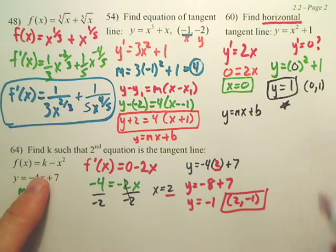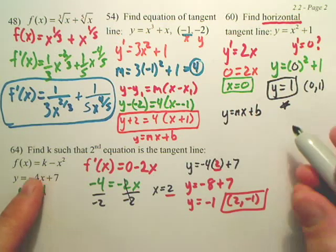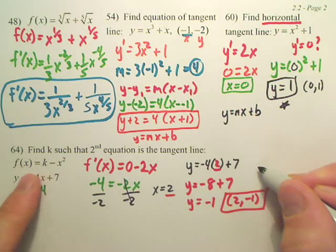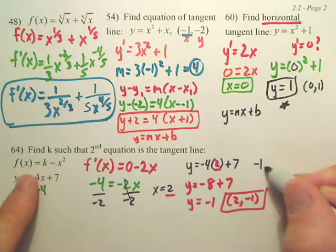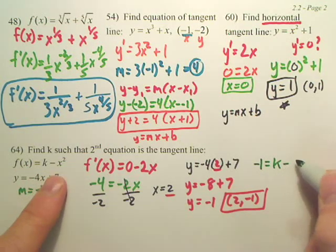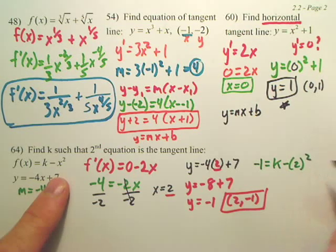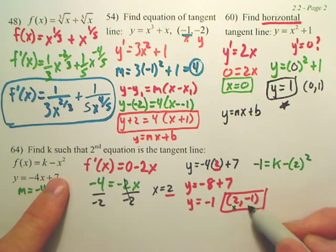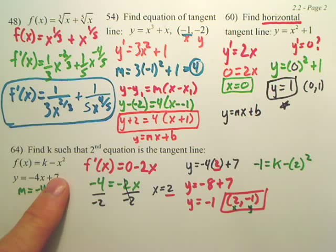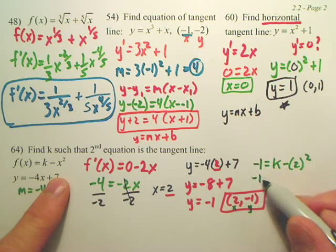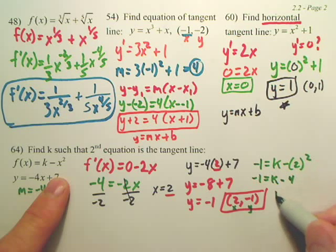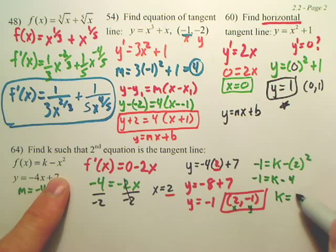So basically, it's kind of weird, I'm describing it kind of funky. But basically, you now take the original equation right here, and you go negative one equals k minus two squared. You just plug my x and y in. So that gives me, ends up with negative one equals k minus four. So it looks like k equals three.